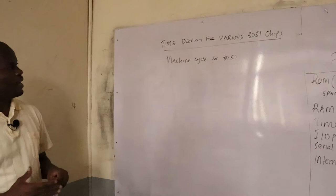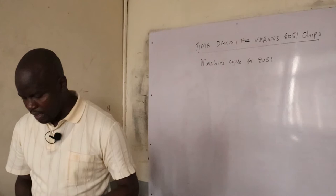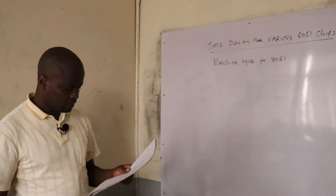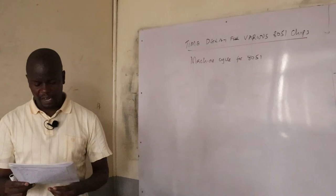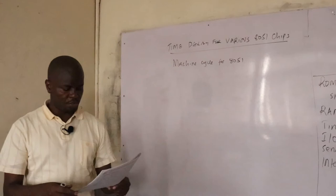If you go to the instruction set of 8051 microcontrollers, you'll find it usually lists the machine cycles for each instruction. Each and every instruction has the number of machine cycles associated with it. In order to calculate the time delay, we use the instruction sets with the details provided in them. The length of the machine cycles depends on the frequency of the crystal oscillator connected to the system.